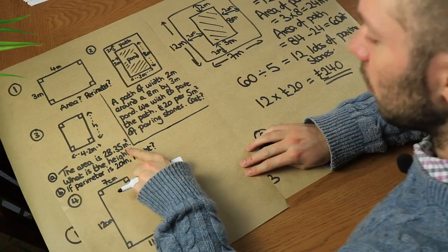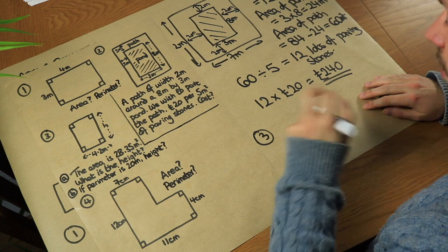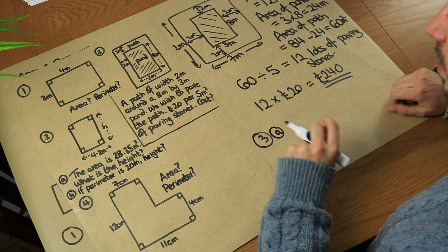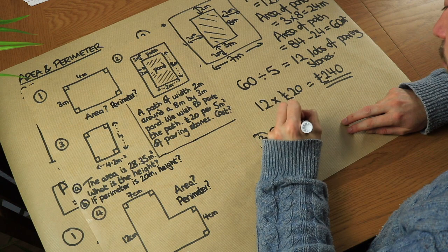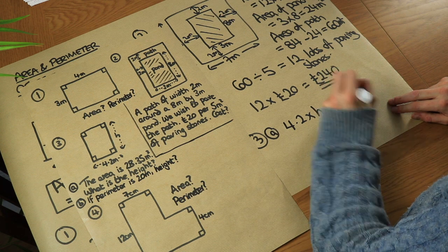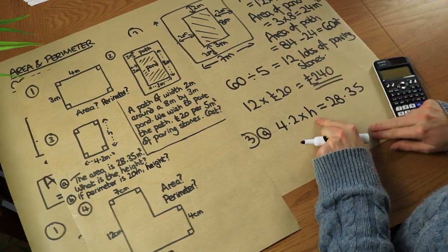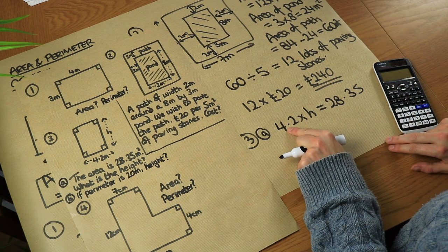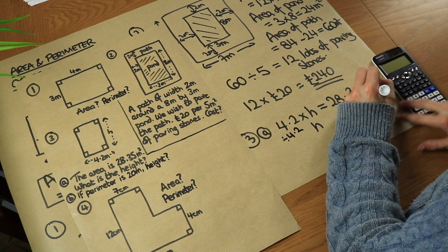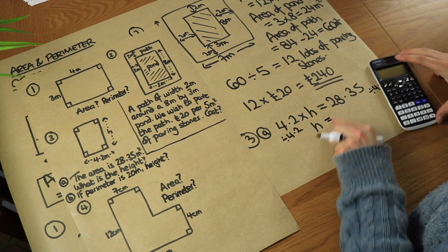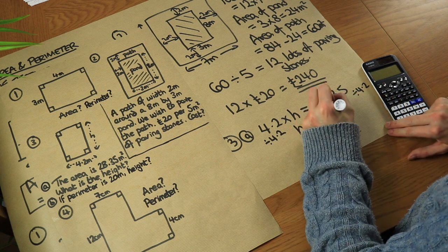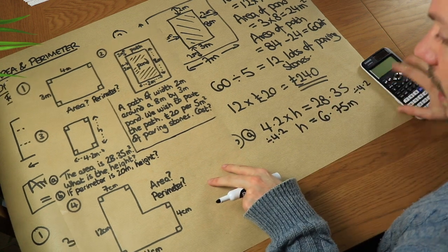For question three, we've got a rectangle where we don't know the height. We're told the area is 28.35 meters squared. To find the area we do 4.2 (the width) times h (the height), and that equals 28.35. To find h, we divide both sides by 4.2, so h equals 28.35 divided by 4.2, which gives us 6.75 meters.